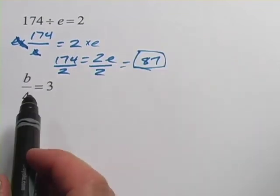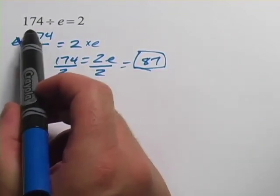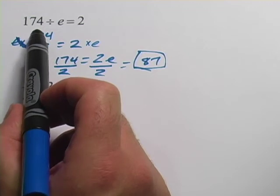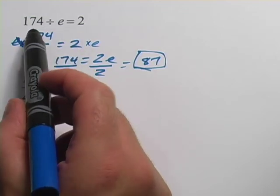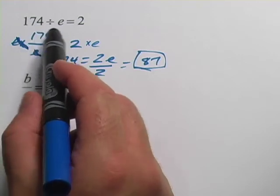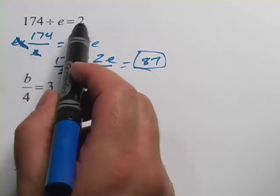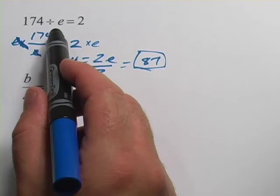The other way to think about this is what would you have to divide 174 by to get 2. And if you think about that, if you're going to divide something by something to get 2, you have to divide it by half of what it is.